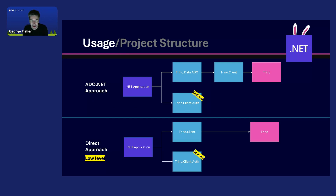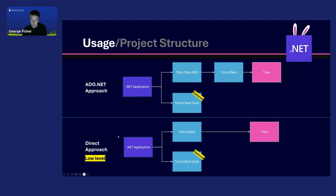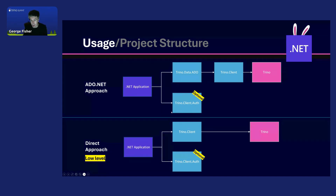So what is the architecture? If you have your .NET application, you can either use the ADO.NET approach, which is most familiar to people who write .NET code, which then calls back into the Trino client. Or if you want that more Java-like experience, more direct, you can talk directly to the Trino client. Authentication is optional in order to reduce dependencies on auth libraries, which can be very specific for security requirements or other things.